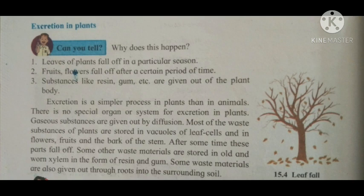Therefore, the excretory matter — the unwanted or harmful material present in plants — is accumulated in the vacuoles inside the cells, or in the flowers, or in the fruits or bark of the tree. So in a particular season, flowers and fruits fall off from the trees, disposing of those unwanted or harmful materials from the plant body.